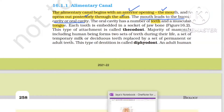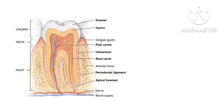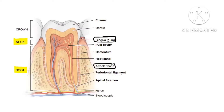Now let me show you the diagram of the teeth. The part embedded in the socket of the jaw bone is the alveolar bone — that embedded part is known as the root. The part surrounded by the gums is known as the neck, and the part which is visible is known as the crown. This arrangement of teeth embedded in the socket of the jaw bone is known as the thecodont condition.